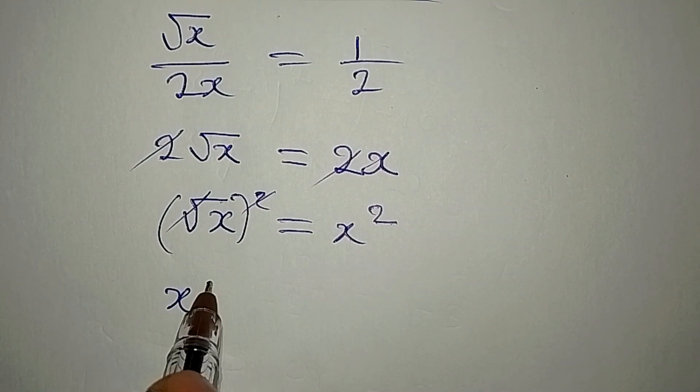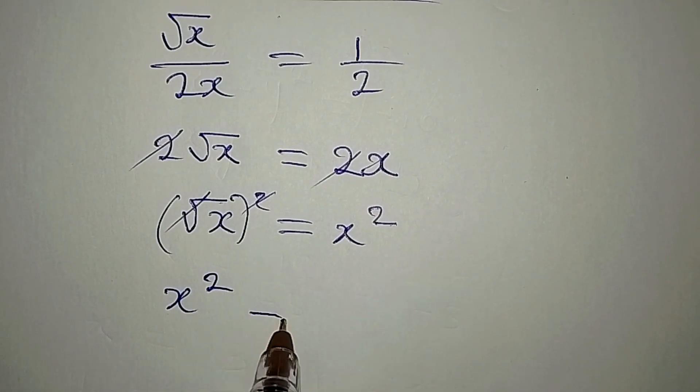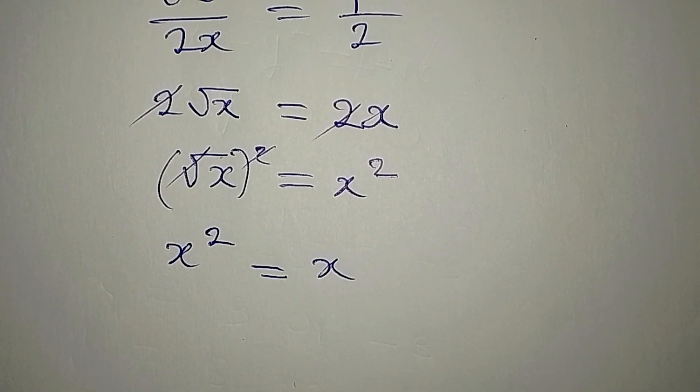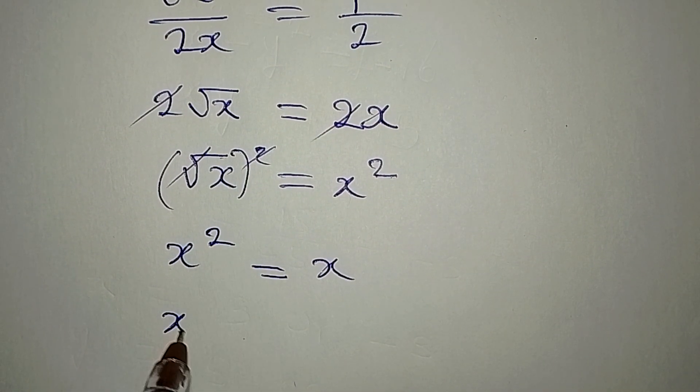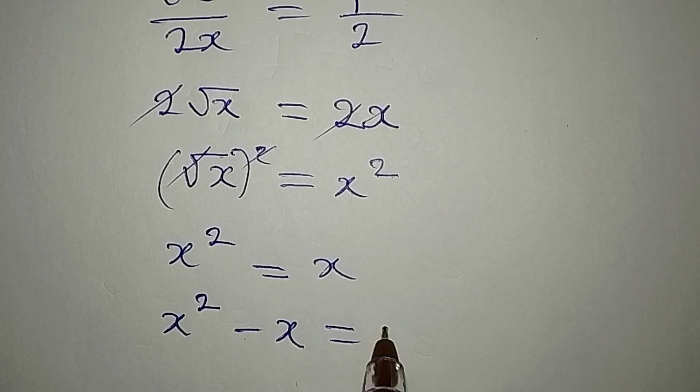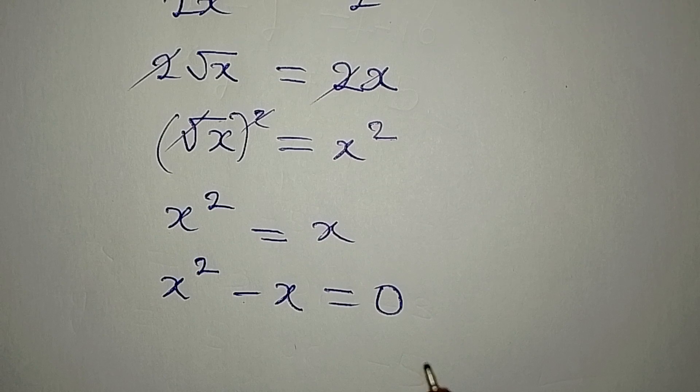Now the next thing is bring everything to the same side, and x squared minus x will be equal to 0. Now something is common, x is common, right? So we have x times x minus 1 which is equal to 0.